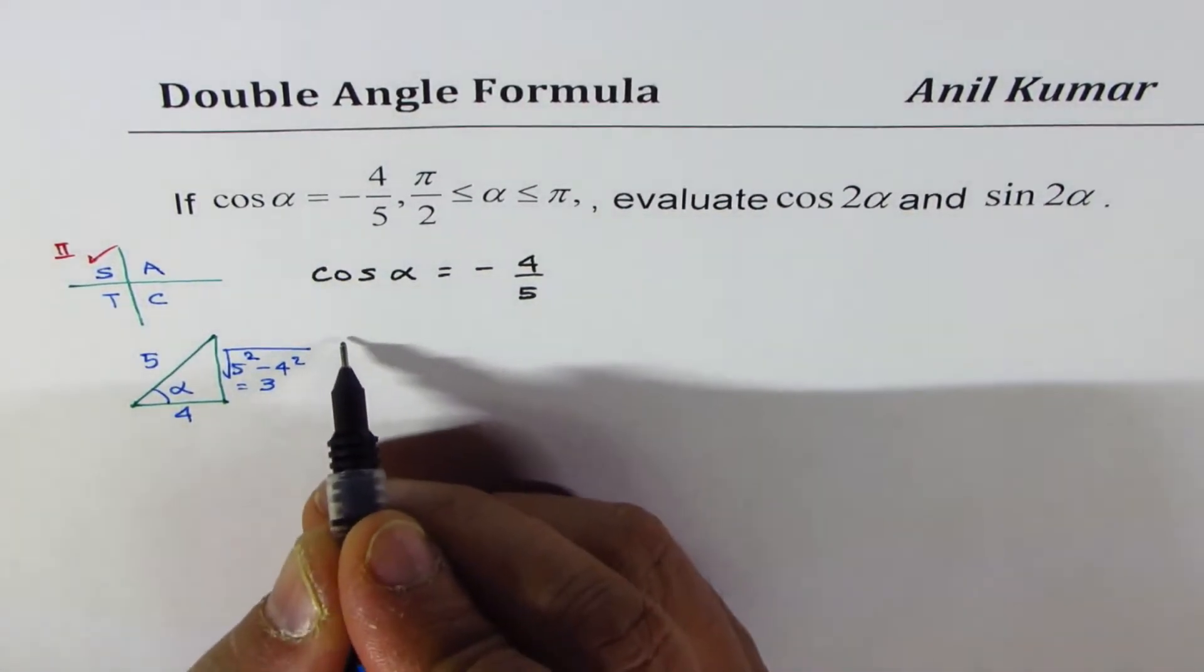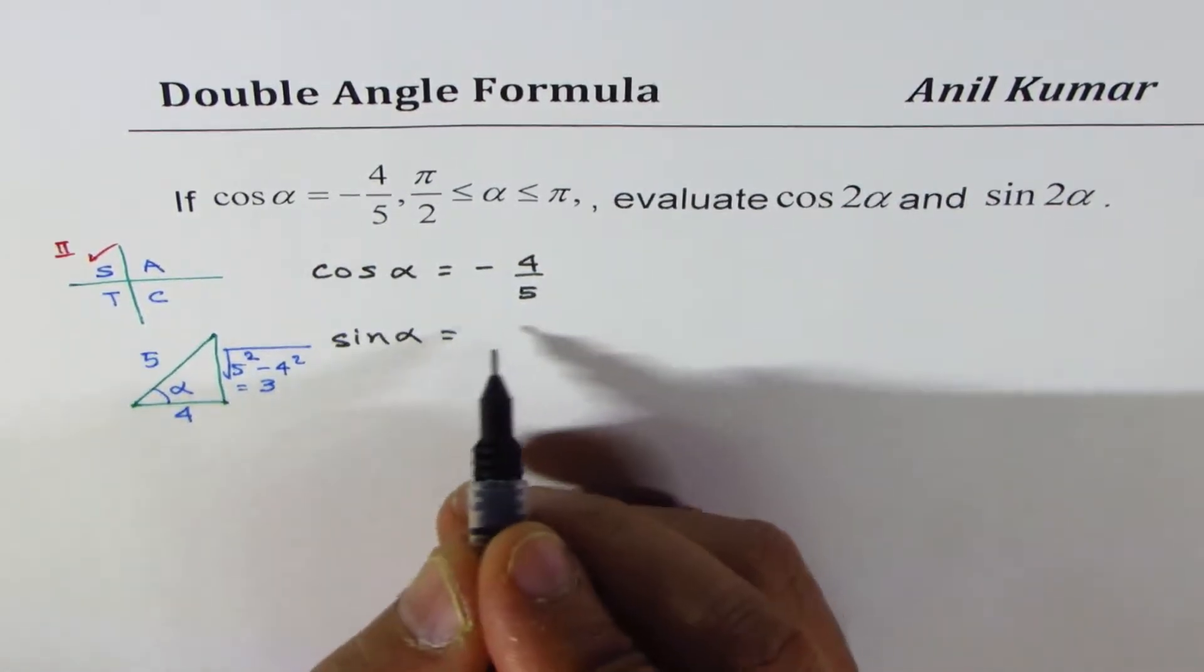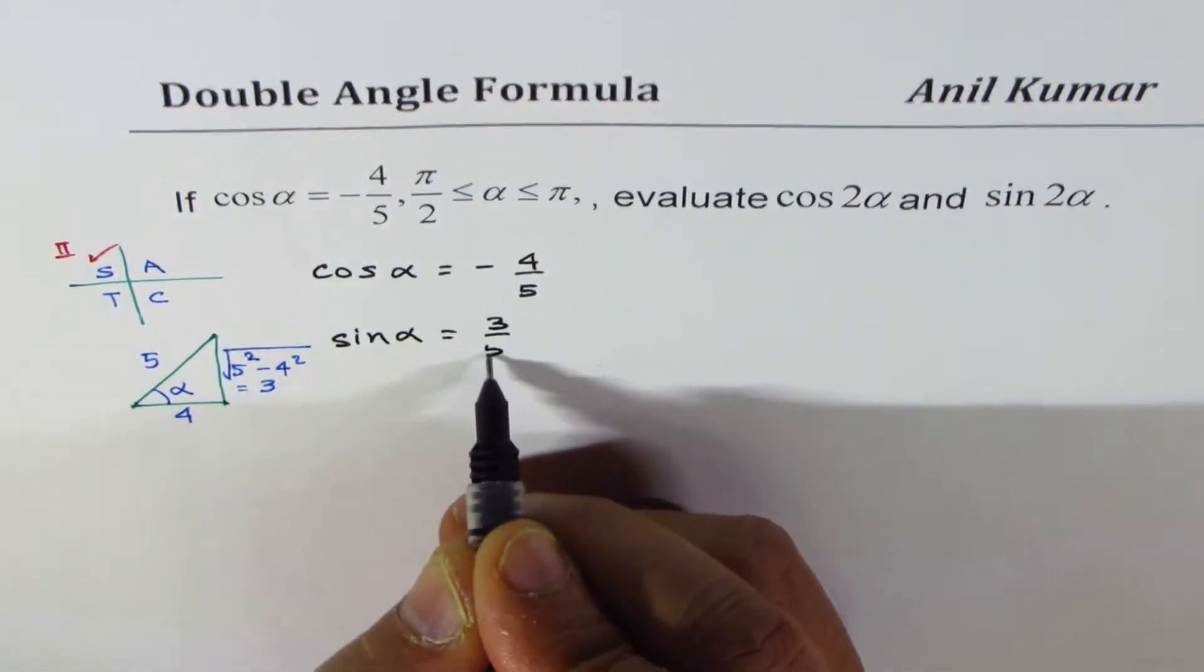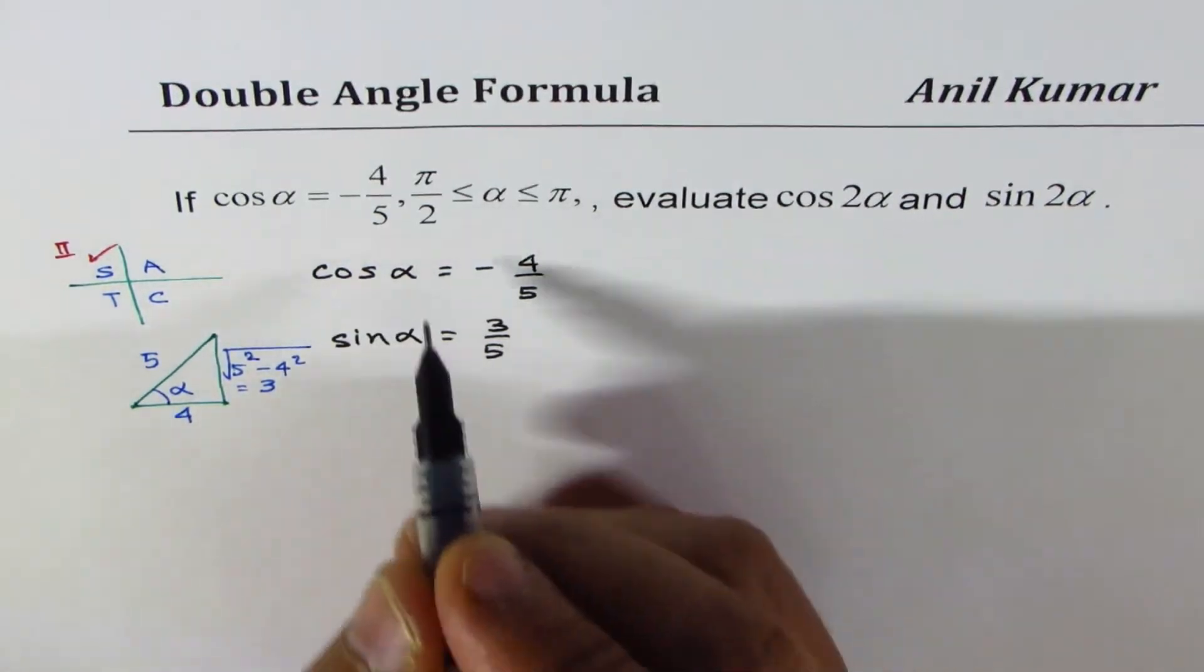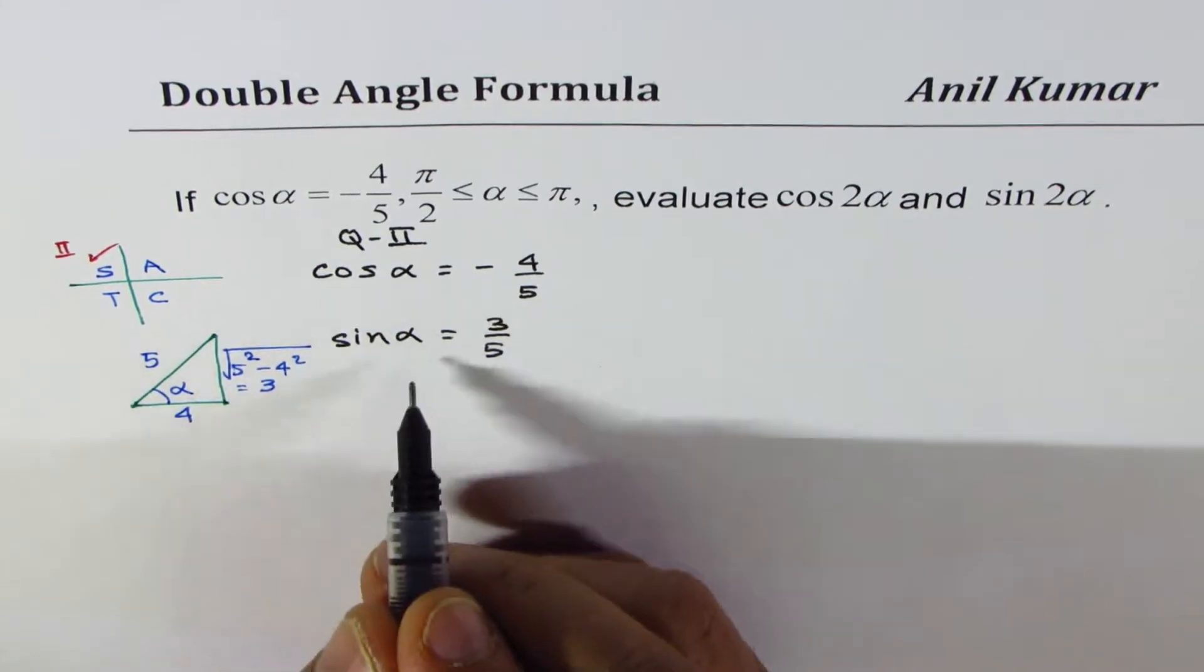Opposite side is 3, and therefore, we have sine alpha as equal to 3 over 5. Since we are in quadrant 2, cos is negative, sine is positive.